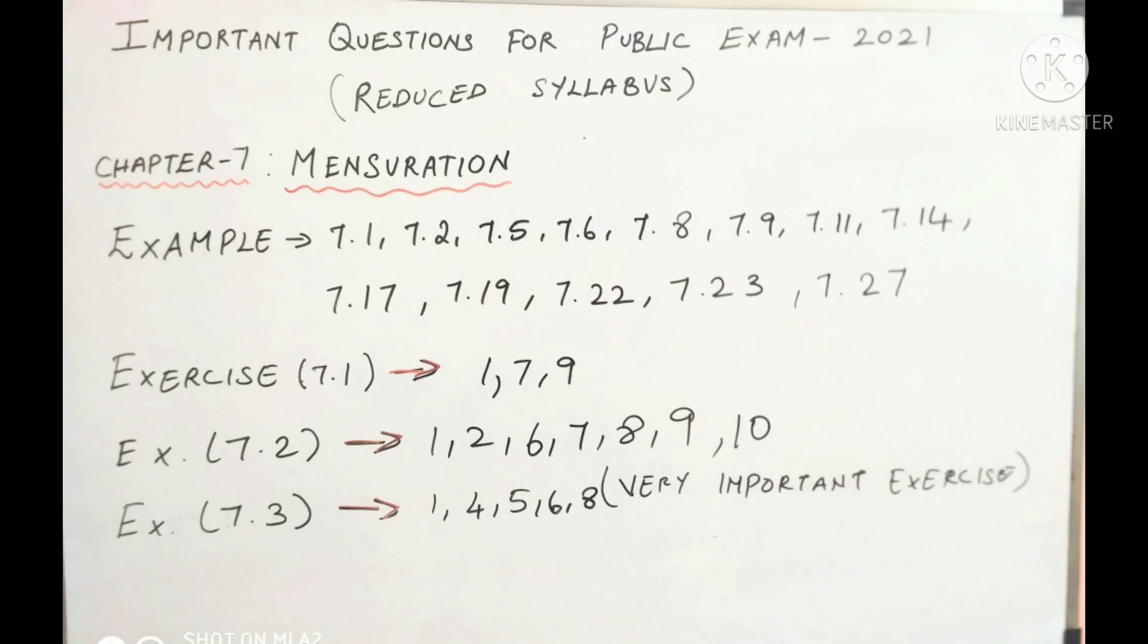Mensuration important sums: example sum 7.1, 7.2, 5, 6, 8, 9, 11, 14, 17, 19, 22, 23, last 7.27. Exercise 7.1: 1, 7 and 9. Exercise 7.2: 1, 2, 6, 7, 8, 9, 10. Exercise 7.3: 1, 4, 5, 6, 8. This is very important exercise.